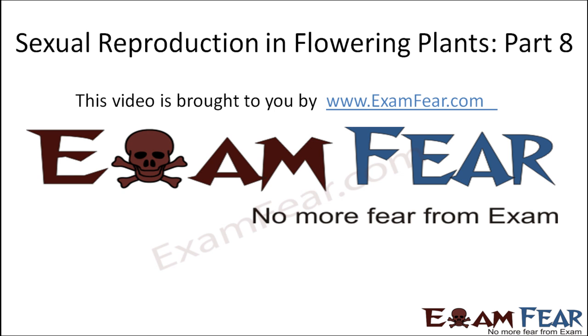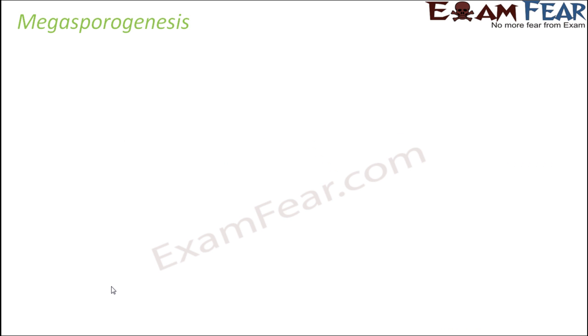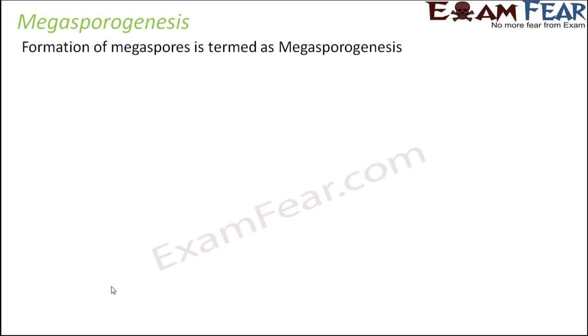Hello friends, this video on sexual reproduction in flowering plants part 8 is brought to you by examfear.com — no more fear from exams. Now let us understand what is megasporogenesis. This is the process of producing megaspores, so the formation of megaspores is termed as megasporogenesis. Gametogenesis is gamete formation, microsporogenesis is microspore formation.